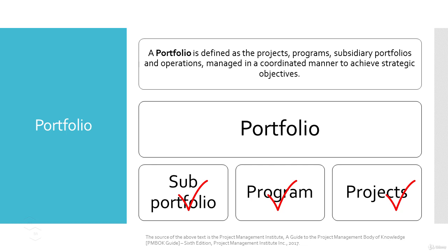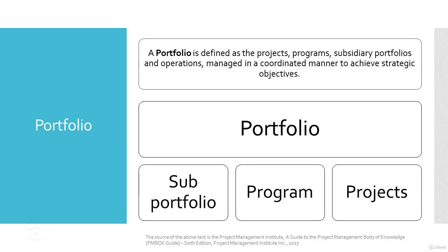Portfolio management means centralized management of one or more portfolios to achieve strategic objectives. A project refers to unique efforts or endeavors that enable us to achieve a certain objective, a program is a group of related projects, and a portfolio is defined as projects, programs, subsidiary portfolios, and operations managed in a coordinated manner. A portfolio is a combination of projects as well as programs, which supports a specific business goal or objective.